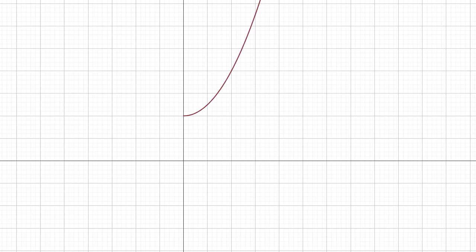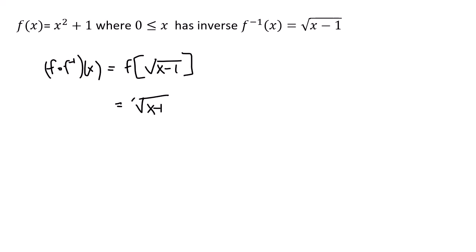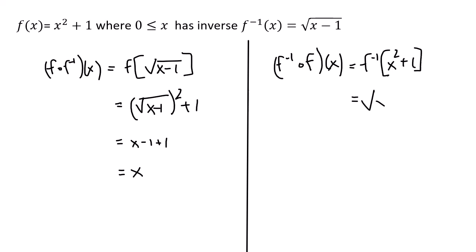Here's the graph of the function with the restricted domain, the graph of its inverse, and the line y = x showing the reflection. To verify: f∘f⁻¹(x) = f(√(x − 1)) = (√(x − 1))² + 1 = x − 1 + 1 = x. And f⁻¹∘f(x) = f⁻¹(x² + 1) = √(x² + 1 − 1) = √(x²) = x. So I've shown that f and its inverse are in fact inverses.